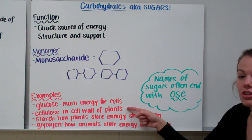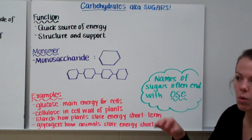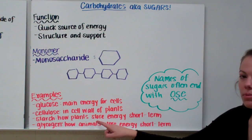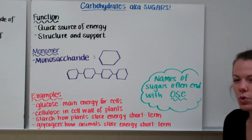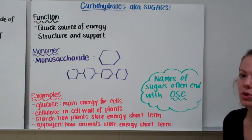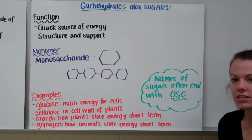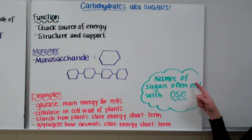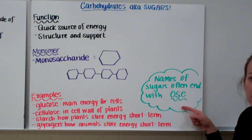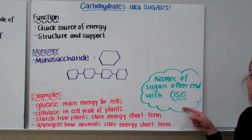Cellulose is the sugar in the cell wall of plants — remember, cell wall, cellulose. Starch is one way that plants can store energy for a short period of time. Glycogen is one way that animals can store energy for a short period of time. So starch is in plants, glycogen is in animals. One thing to note is that many names of carbohydrates end in -ose. So if you're asked a question on a test and you're not sure, but it ends in -ose, it's probably a sugar or carbohydrate.